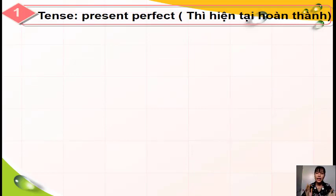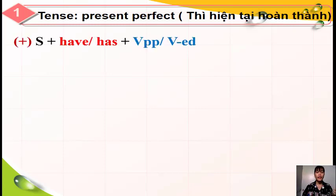Về thì hiện tại hoàn thành - present perfect tense. Để làm tốt nội dung này, cô yêu cầu các em hãy học tốt phần động từ bất quy tắc, bởi vì đó là một phần rất quan trọng khi chúng ta chia thì này. Chúng ta sẽ cùng nhau xem lại công thức: thì hiện tại hoàn thành bao gồm chủ từ cộng cho 'have' hoặc 'has', cộng cho phân từ 2 hoặc động từ thêm '-ed'.